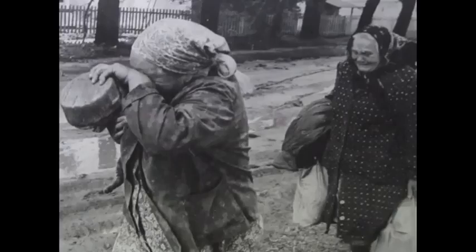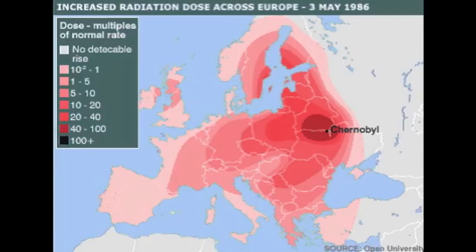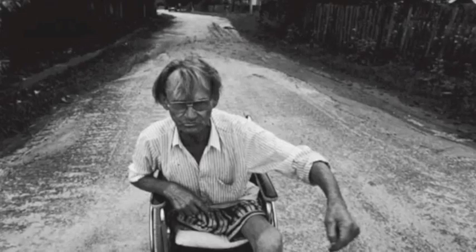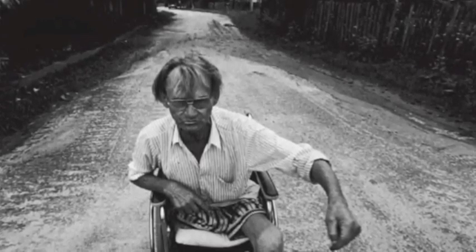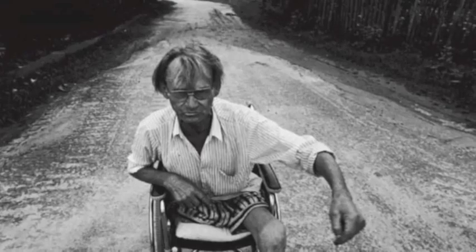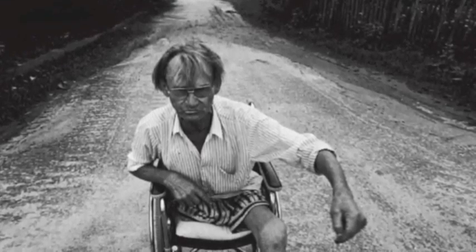This pollution problem greatly affected society, not only in Chernobyl, but also in a large area of Europe. All the people in 76 nearby towns had to evacuate the zone. The radiation spread out to most of Europe and people had to evacuate any areas near Chernobyl.